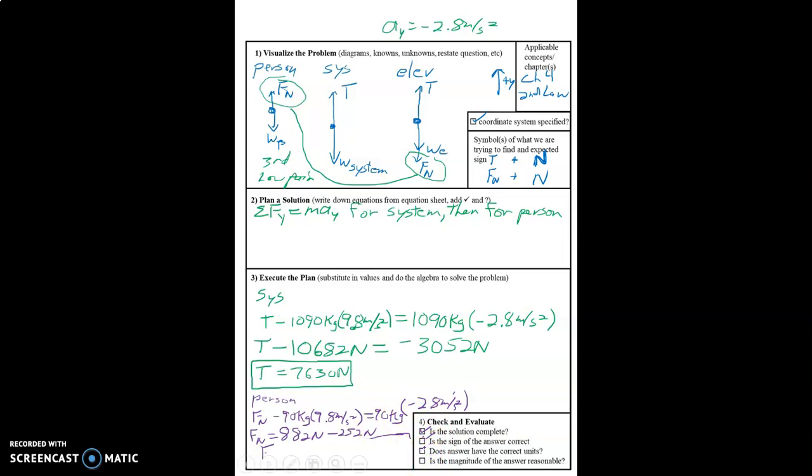If we compare these answers to the weights, we see that they're different than the weights. And that's to be expected because the elevator is accelerating. If the elevator had been going at a constant velocity, then we would expect that the values would match those of the weights.